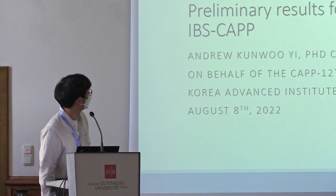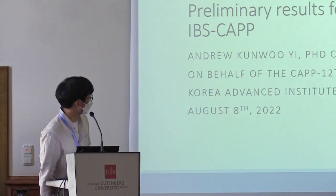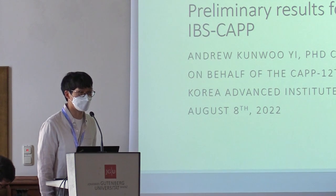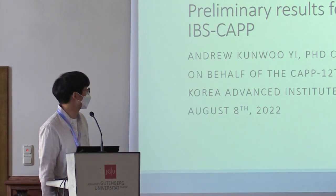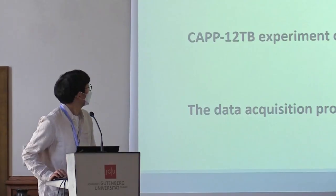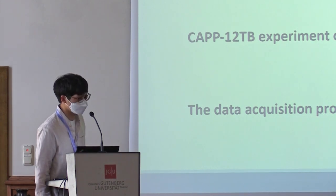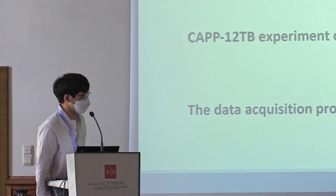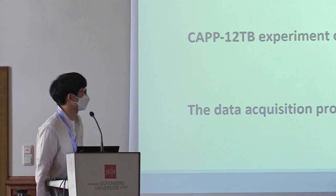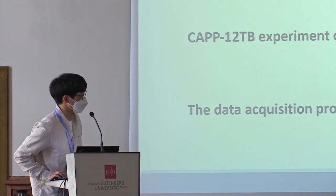This is the first axion talk. I will be talking about the DFSZ axion searches at CAPP. This is a continuation of work presented last year, and this time we have preliminary results showing what kind of limits we've achieved. I'll give a brief introduction to axions and the haloscope experiment, then cover the experiment overview, equipment, data acquisition process, and results.